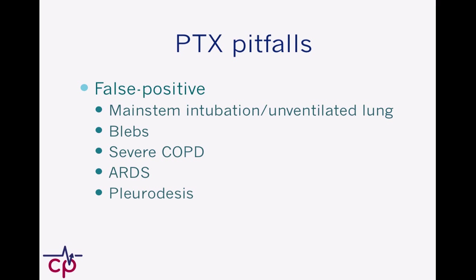I wanted to mention briefly about pitfalls. If someone doesn't have normal movement to their lung — like if their lung is not ventilated, as in the case of a mainstem intubation — that lack of pleural sliding means you're not going to see what looks like normal lung on ultrasound. There has to be pleural sliding for you to declare a lung as looking normal. So know that a mainstem intubation is going to look like a pneumothorax on this exam.